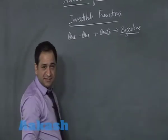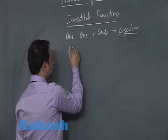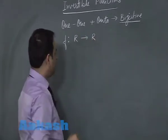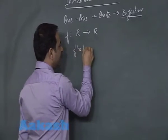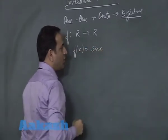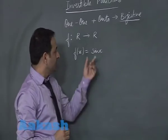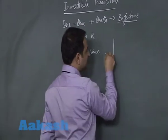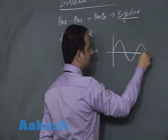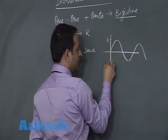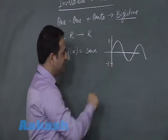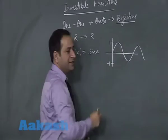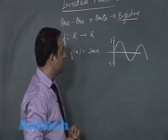When we talk about the first function, that is the sin function: the domain is R and the codomain is again R. This function, f(x) = sin x, is not invertible. Why is it not invertible? This function is many-one as well as into. Its range is from minus one to one. Why is it many-one? Because for two values of x, you are getting the same y. So this function is a many-one function.